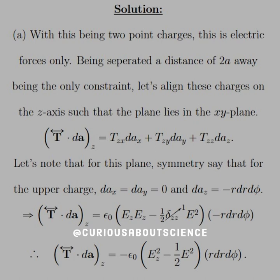For our solution, part A: with this being two point charges, this is electric forces only. Since we're not dealing with moving charges, there's no currents, no magnetic forces to deal with. Being separated by a distance of 2A away being the only constraint, let's align these charges to the z-axis. And we'll show that the plane was in the x-y plane. This makes it easier geometry.